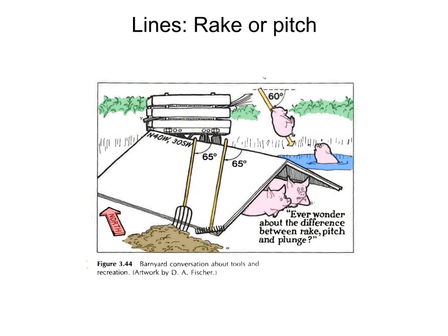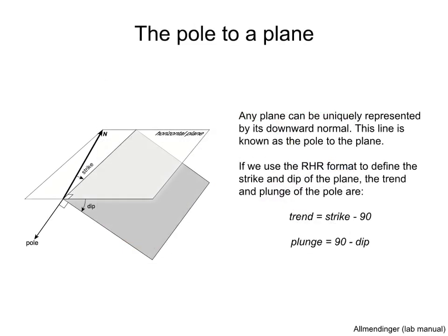This cartoon shows the difference between rake, pitch, and plunge. Rake and pitch are the same thing. Plunge is different and perhaps more fun. The pole to the plane is the downward normal to the plane, shown as the blue line in the figure. If we measure the strike and dip of the plane using the right-hand rule format, the trend of the pole is the strike of the plane minus 90, and the plunge of the pole is 90 minus the dip of the plane. This line fully describes the orientation of the plane.